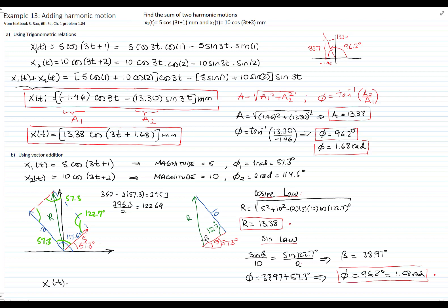My total harmonic motion is that resultant that I found, 13.38, cosine of 3t plus the phase angle, 1.68 radians.